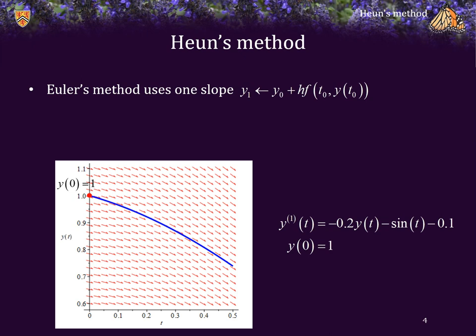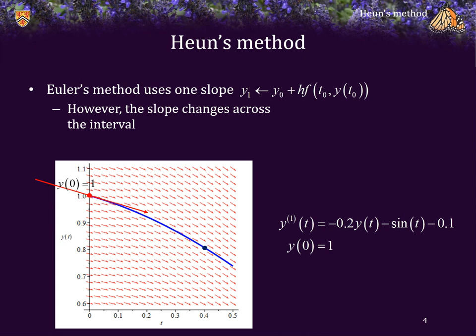Euler's method uses only one slope to approximate the next point. We calculate the slope at this point and then add h times that slope onto the previous y value. So if we were to approximate the solution at t equals 0.4, we would add 0.4 times that slope onto y-naught. However, just like with integrating functions, the slope changes across the interval from 0 to 0.4. As we go on, the slope in the vicinity of the solution becomes more negative, so our estimate with Euler's method actually overshoots the actual value of the solution.